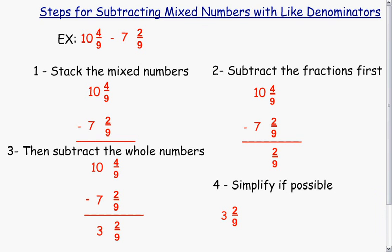As you can see in our example question, we have 10 and 4 ninths minus 7 and 2 ninths. As you may have already noticed, our denominators are the same.